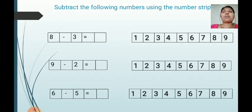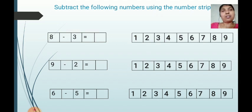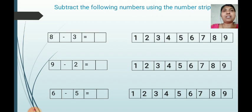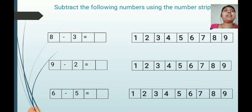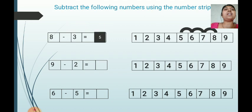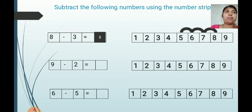Below that you can see an exercise in a yellow box: 'Subtract the following numbers using the number strip.' Solve these examples in your textbook. The first example is 8 minus 3. Put your pencil on number 8 and jump 3 steps backward: 1, 2, 3. Your answer is 5. Write down 5 in the box. 8 minus 3 equals 5.